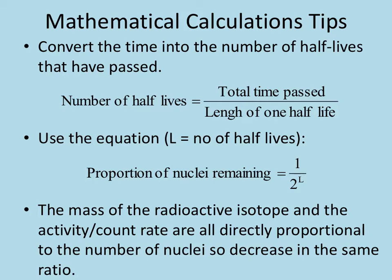Once you've got the number of half-lives, you can find the proportion of nuclei remaining by doing a half to the power of the number of half-lives. You can also multiply a half by itself for however many half-lives you have, but it's much quicker to put it into the calculator as a half to the power of the number of half-lives. The mass of the radioactive isotope and the activity or count rate are all directly proportional to the number of nuclei, so they decrease in exactly the same way.